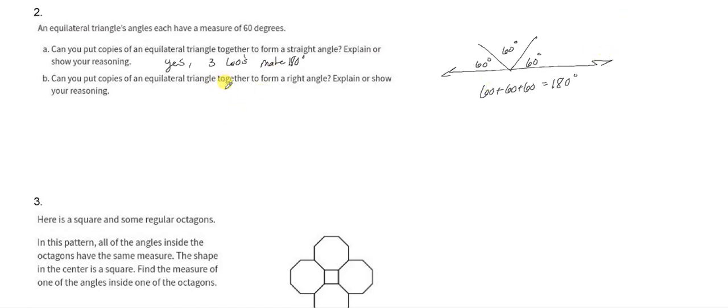Can you put copies of an equilateral triangle together to form a right angle? Well, let's see. If you do a 60, which would be roughly here, you try to do another 60, which would put you out here, you'd go past the 90 degree mark.